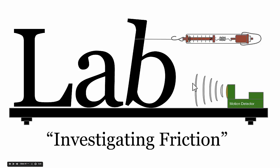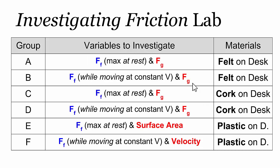In our investigating friction lab, we wanted to determine what different things affect the size of the force of friction. To do that, we had six different lab groups perform six different experiments. The variables in red represent the independent variable for each lab group. For group A, they varied the size of the force of gravity on an object, or the object's weight, and measured its effect on the force of friction.